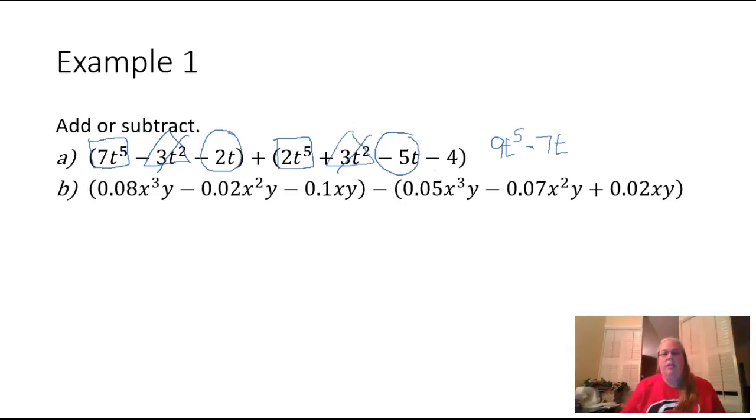Then we noticed that we have this little guy right here left over, the negative four. There was nothing up here to combine with. So it's the same thing as adding it to zero. So zero plus negative four is negative four. And so the answer to a is right here: nine t to the fifth minus seven t minus four.